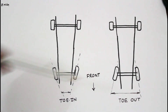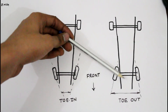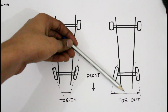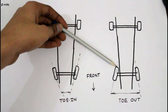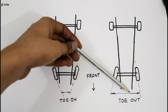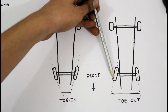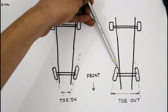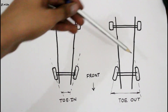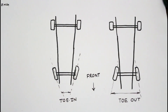If the distance between the front wheels at the front end is greater than the distance between them at the rear, it is called toe-out. The purpose of toe-out is to prevent the tendency of the wheel to drag during turns.